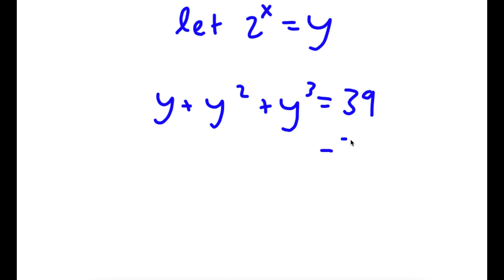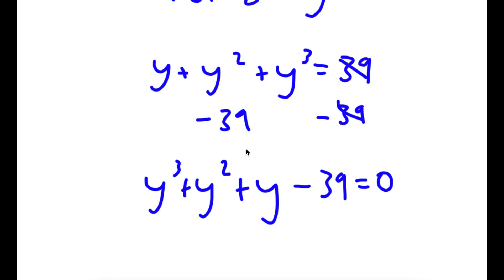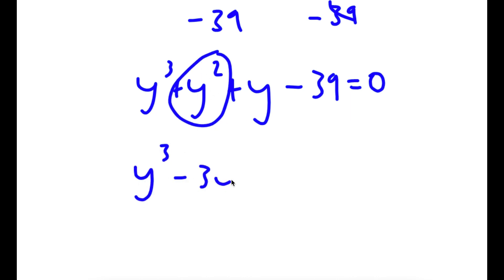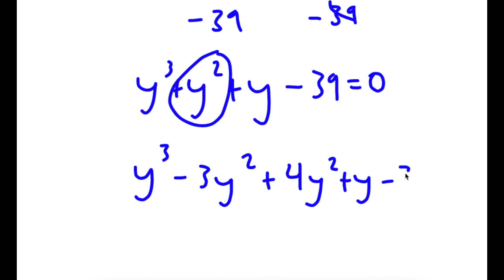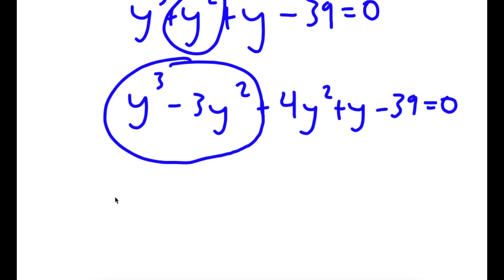I'm going to subtract 39 on both sides, and now I have y to the power of 3 plus y to the power of 2 plus y minus 39 is equal to 0. Now, I'm going to rewrite y squared as negative 3y squared plus 4y squared. From y to the power of 3 minus 3y squared, I can factor out y squared, giving y squared times y minus 3.